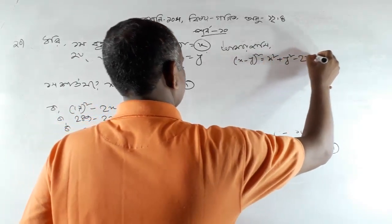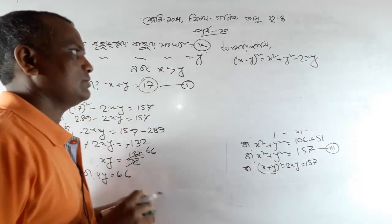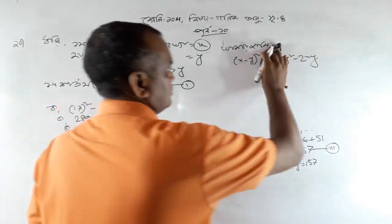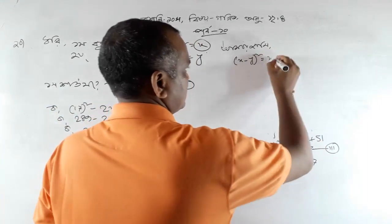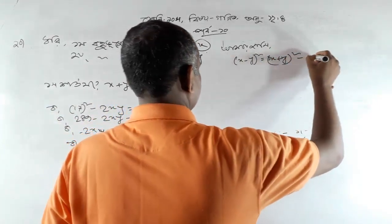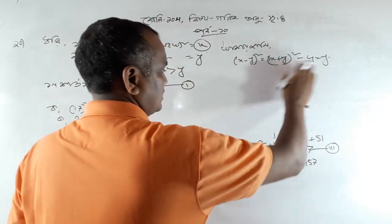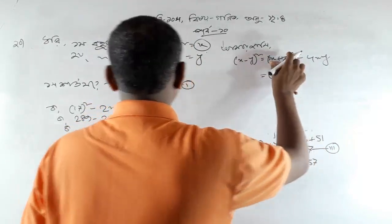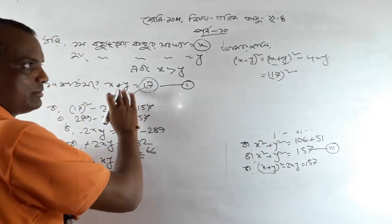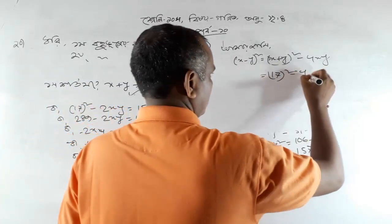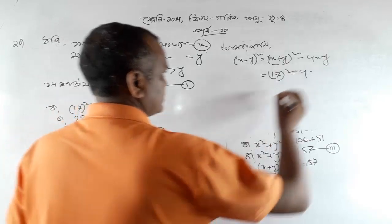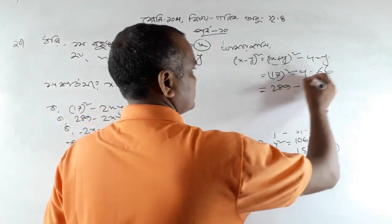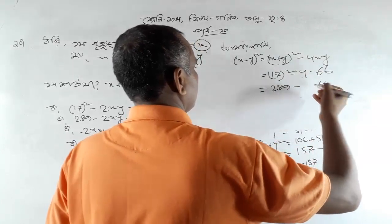So, we have a plus b squared minus 4ab. Now let's take out the slot. This is x plus y. So it can be found in the quantity. I need to add a into x plus y, then of course it can be more. 4 into xy is 66. 299 minus 4 to 7. Then we have 625.